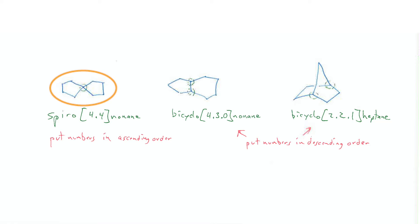Here we've got that spirocyclic compound again. First, find the parent chain. We have nine total atoms in the two rings — two five-membered rings sharing one atom, so it's nine: nonane. Because this is a spirocycle, there's only one bridgehead. We count the sizes of the two bridges linking the bridgehead back to itself. Going through the left ring, it's a four-atom bridge; going through the right ring, also a four-atom bridge. So the name is spiro[4.4]nonane. If you have bridges of different sizes in a spirocycle, list them in ascending order — so three before five, for example.